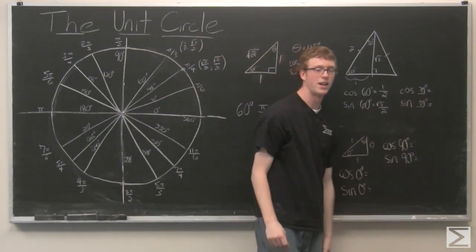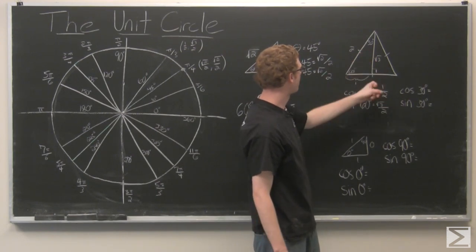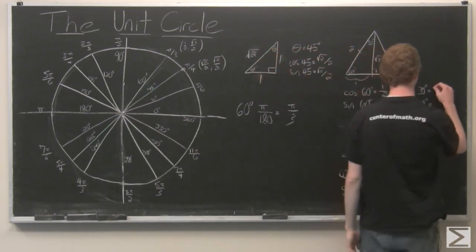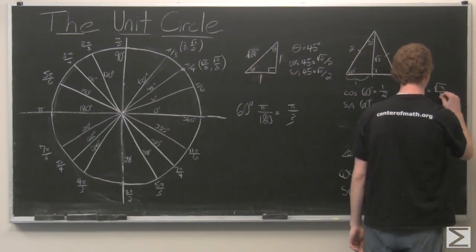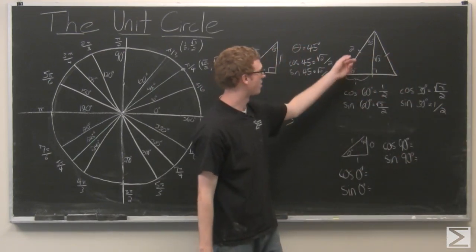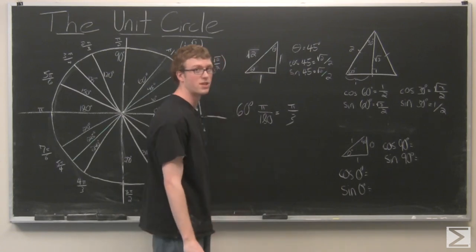And last we're going to look at cosine of 30 and sine of 30. Cosine of 30 is going to be root 3 over 2 adjacent over hypotenuse. And sine of 30 opposite over hypotenuse is one half. So we can again put these points into our unit circle.